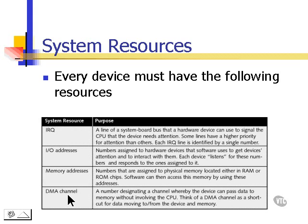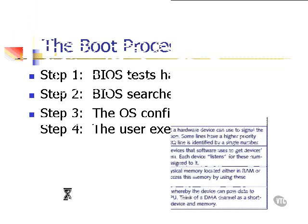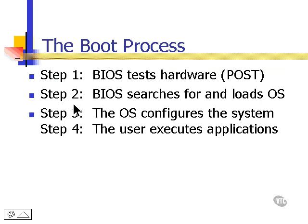Now let's take a look at how the boot process works. We'll take a look at an overview, and then look deeper into each step. Step number one: BIOS tests the hardware — this is called the POST, or power-on self-test. In step number two, BIOS will search for and load an operating system. In step number three, the operating system will configure the system. And finally, in step number four, the user will execute an application, which pulls the whole thing together.